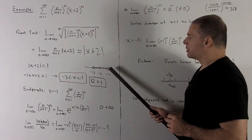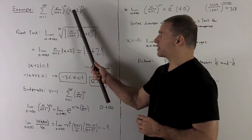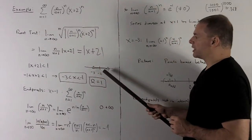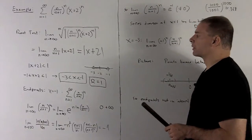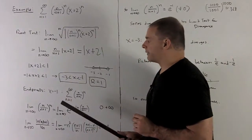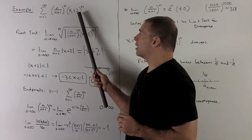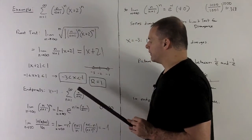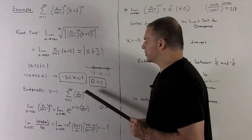The center of our interval is -2, which we'd expect since this is x minus minus 2. The distance from -2 to either -1 or -3 is 1, so that's our radius of convergence. Now let's look at the endpoints. At x = -1, putting -1 in gives us 1 to the n, which equals 1. So we're looking at the series of (n/(n+1))^n, and I'm going to show that this diverges by the limit test for divergence.